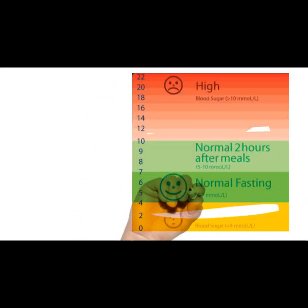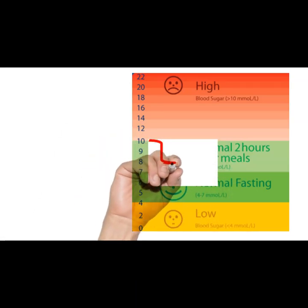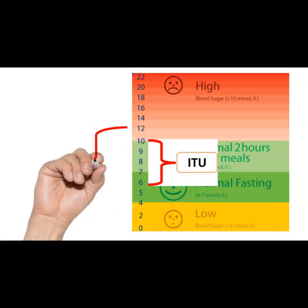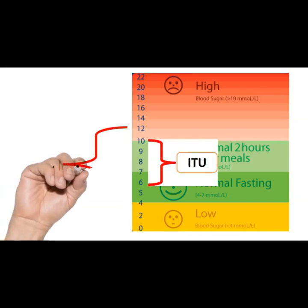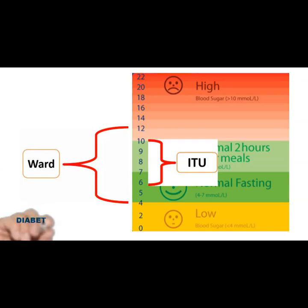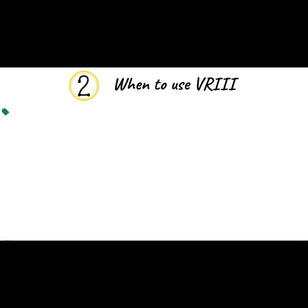It means that monitoring of blood glucose is necessary every hour through a finger prick check. This ensures that the target blood glucose levels are maintained. In an ITU setting this can be strict, between 6 and 10 millimoles per litre, but for a ward-based setting it can range between 4 and 12 millimoles per litre.